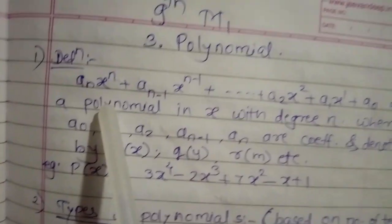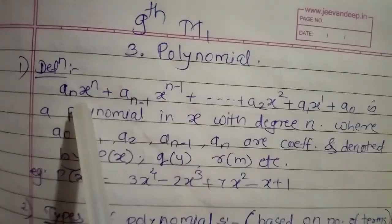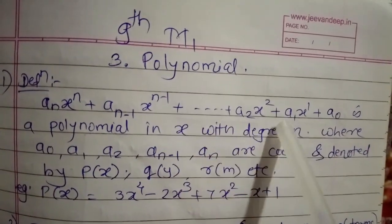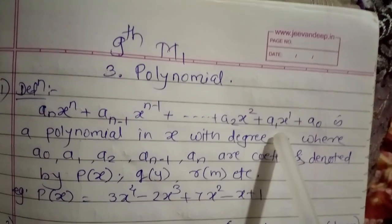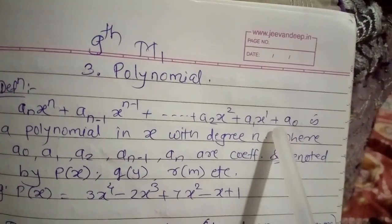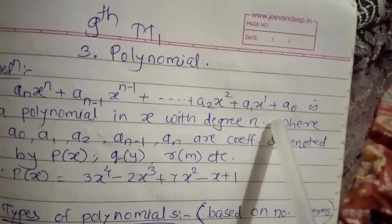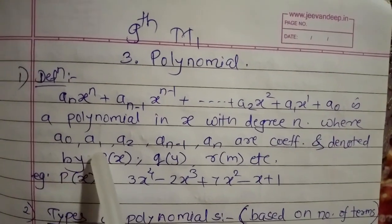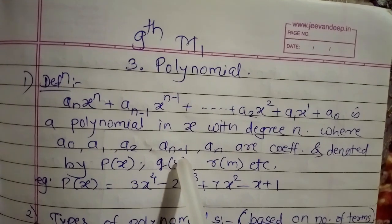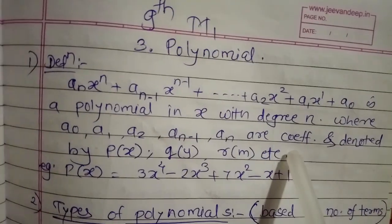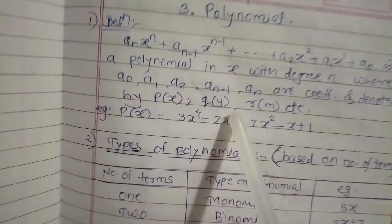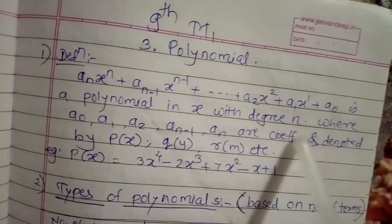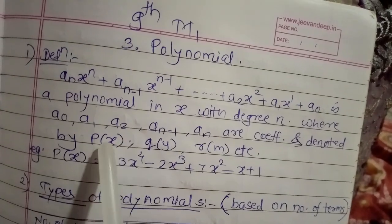First, see the definition of polynomial. The expression which is in the form of a_n x^n + a_(n-1) x^(n-1) + ... + a2 x^2 + a1 x + a0 is a polynomial in x with degree n, where a0, a1, a2, ..., a_(n-1), a_n are the coefficients. It is denoted by p(x), q(y), r(m), etc.